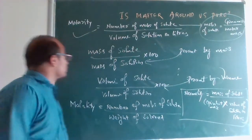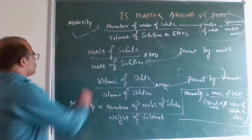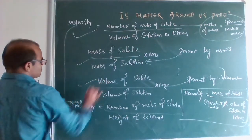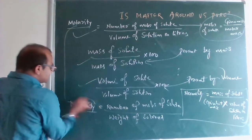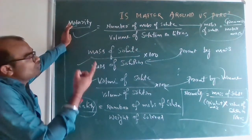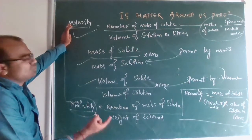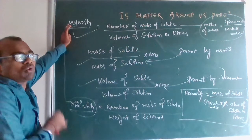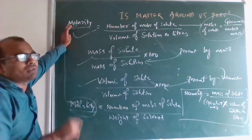Normality: mass of solute divided by equivalent mass into volume of solution in liter. After this we go to molality. Molality: number of moles of solute divided by weight of solvent. Volume of solution in denominator means molarity; weight of solvent in denominator means molality.